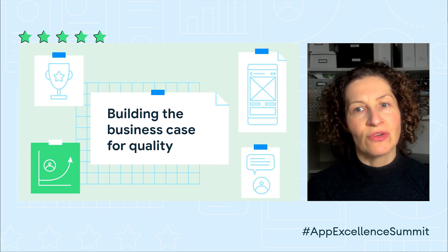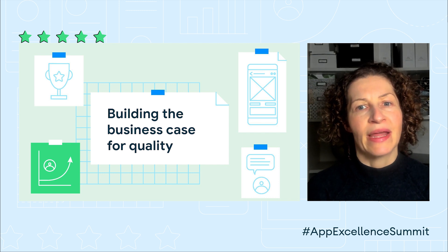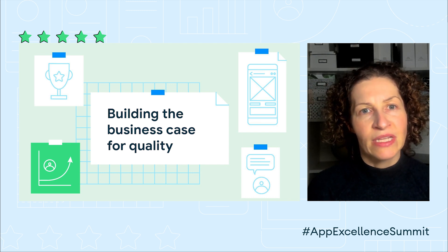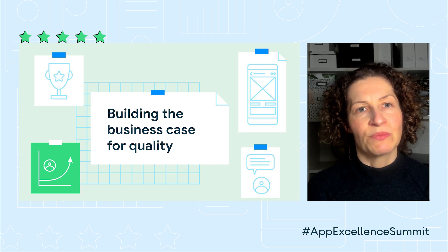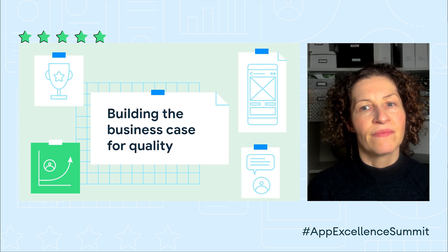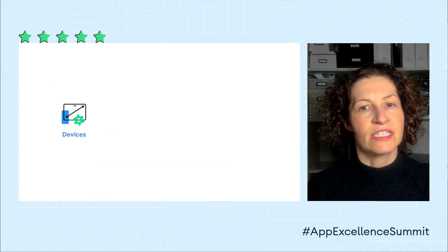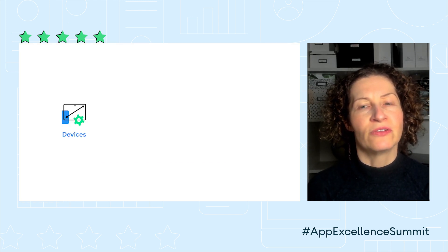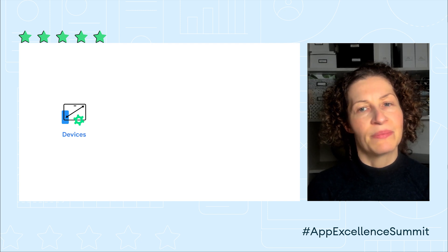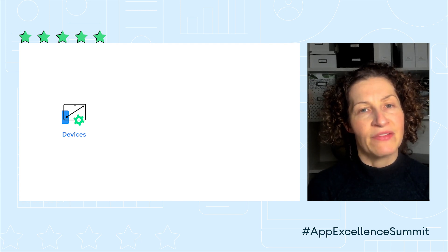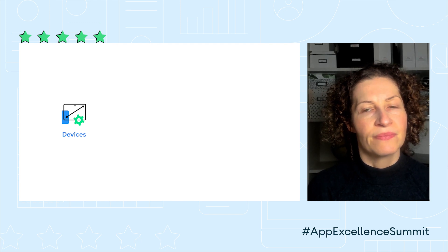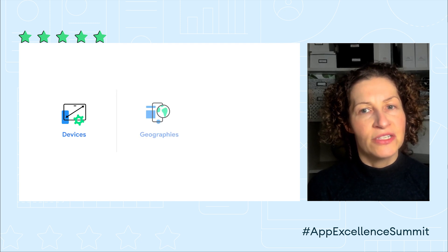Now I've talked about how you measure your app quality on Play. Let me talk about how you build the business case to invest in it. There are three main decisions where it's important to think about the quality business case. The first is what device specs you build for and target when you first launch your app — and not only at launch, but over time, how this might change.